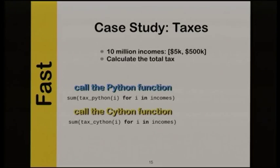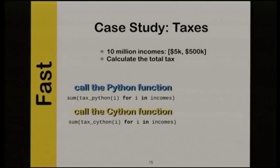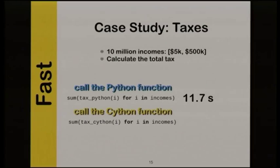There are 11.5 million registered taxpayers in Australia — I just went with 10 million to make it simpler. I randomized a bunch of incomes from $5,000 to $500,000 a year and I want to calculate everyone's tax and add it up. If you were doing an economic simulation or optimizing a tax table, you might have to do this calculation many, many times. Using a sum generator in Python calling the tax function over all 10 million incomes, how long does that take to run? It takes 12 seconds. If I have to do that a thousand times, it begins to become difficult to reason about the system.